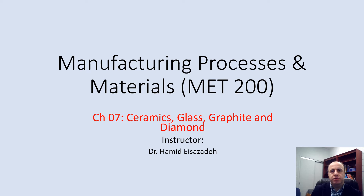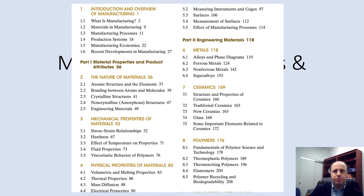Welcome to MET 200 Manufacturing Processes and Materials. This is Lecture 9, and in this lecture we will be talking about ceramic, glass, graphite, and diamond. It is commonly assumed that metal is the most important material for engineering applications, but it's interesting that ceramic materials are actually more abundant and widely used. We will also cover other elements related to ceramic such as graphite, carbon, and diamond — Chapter 7 of the textbook.